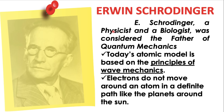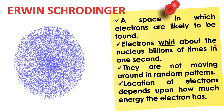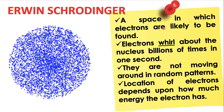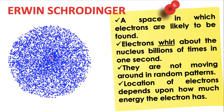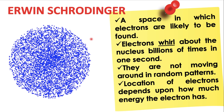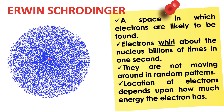The last one is Erwin Schrödinger. He is a physicist and biologist and was considered the father of quantum mechanics. Today's atomic model is based on the principles of wave mechanics. According to him, electrons do not move around an atom in a definite path like the planets around the sun. Instead, there is a space in which electrons are likely to be found. Electrons whirl about the nucleus billions of times in one second, not in random patterns — their location depends on how much energy the electron has.